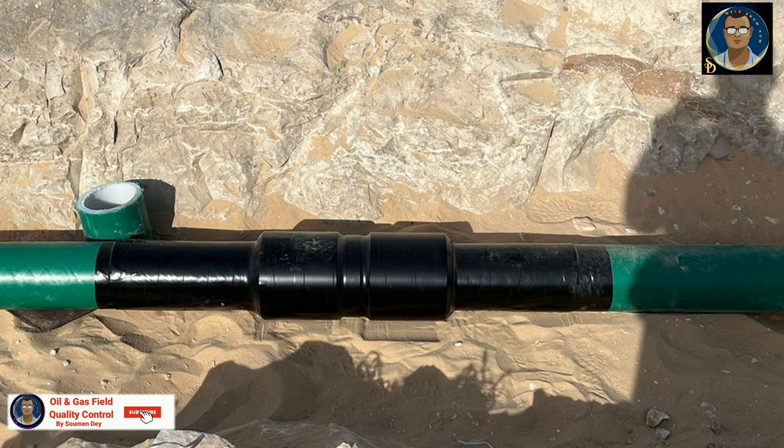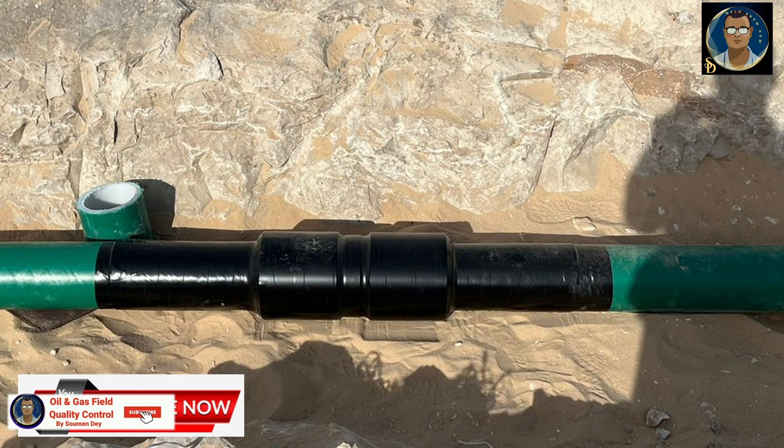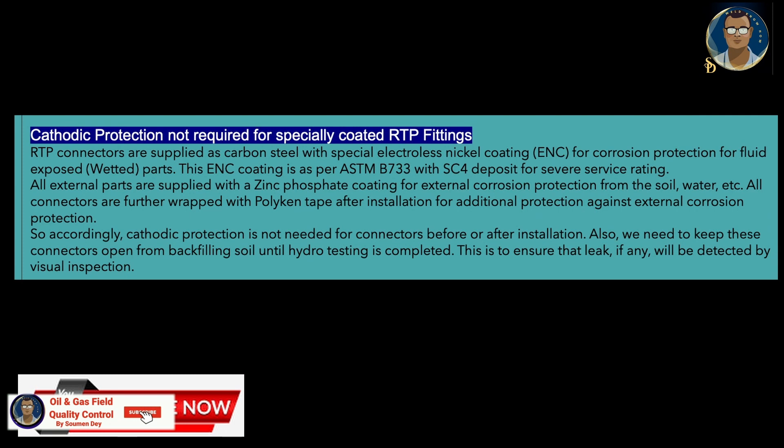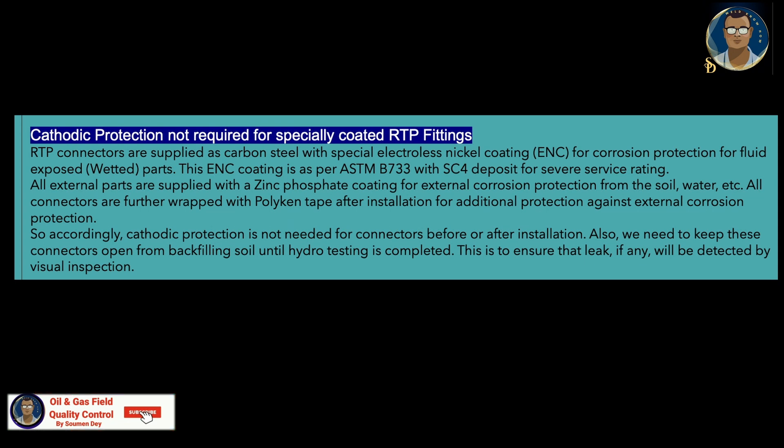We also need to keep these connectors open from backfilling soil until hydro testing is completed, to ensure that any leak will be detected by visual inspection. So make sure, if you are part of any review of an RTP pipeline before ordering, you should request this type of coating and protection to avoid the huge expense of cathodic protection, which will make your schedule very quick for completion of the RTP pipeline.